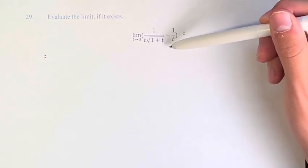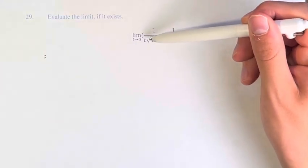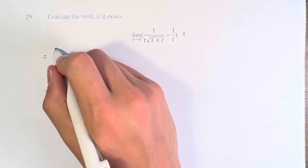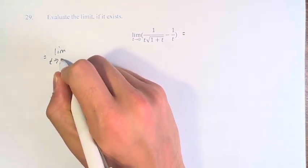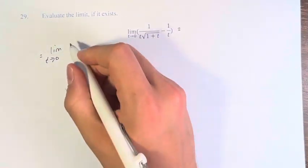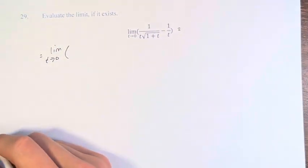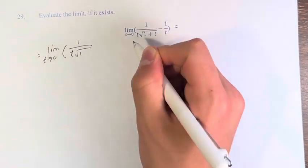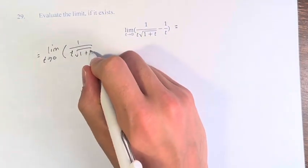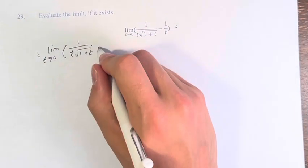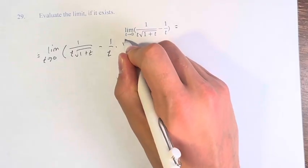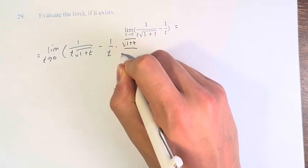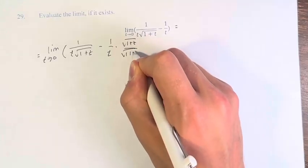We have 1 over t and 1 over t times the square root of 1 plus t. So in order to get to the same denominator, what we have to do is take 1 over t and multiply it by the square root of 1 plus t over the square root of 1 plus t.